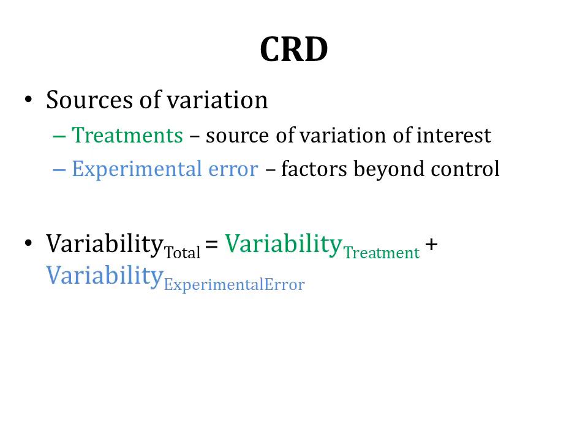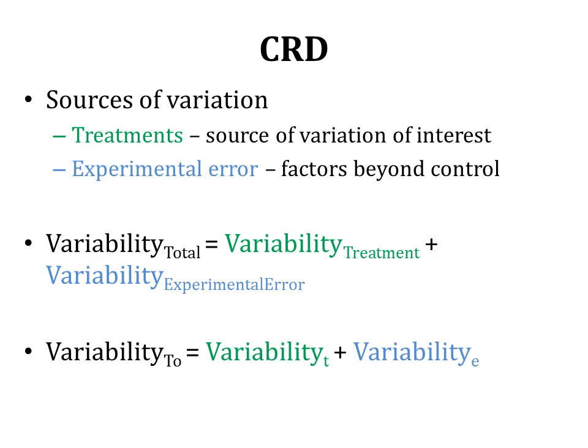The total variability seen in the response of experimental units is the sum of variability due to treatments and variability due to experimental error. So: SS_Total = SS_Treatment + SS_Error. We can designate total as TO, treatment as t, and experimental error as e. This is the basic principle of CRD and forms the basis for statistical analysis of data obtained by CRD.